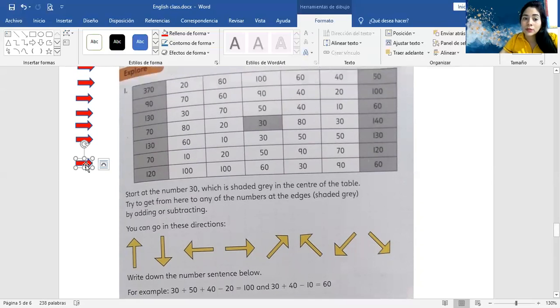That is 30 plus 50 plus 40 minus 20. So guys, wait a minute. 30, go up. Do you see the sample? Do you see the sample? So you can go up, up, up, down, to the left, to the right, or diagonal, diagonal way.